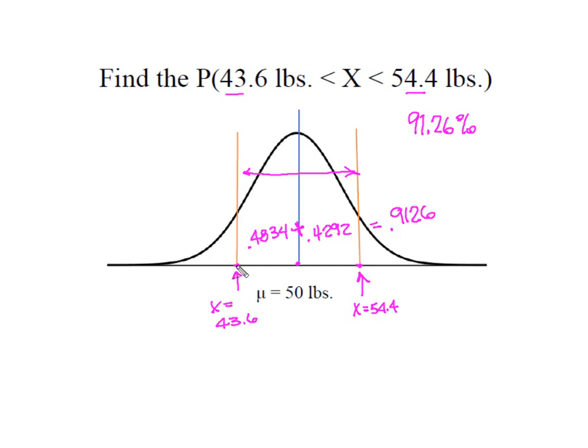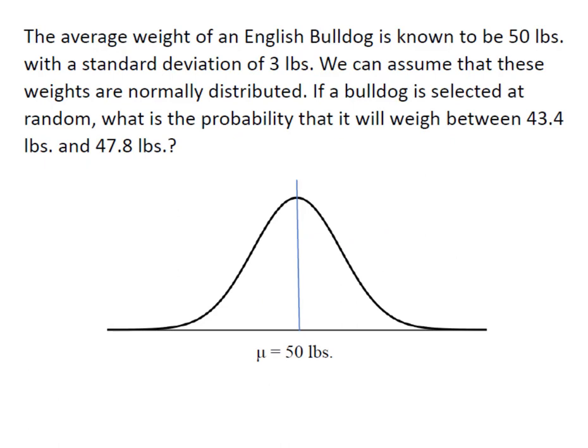What happens though when we have both values of X on one side of the mean, rather it's both below or both above? Same bulldogs, except now I want to know the probability that this randomly selected dog is going to weigh between 43.4 and 47.8. So now I'm going to locate both of my X's on the same side of the mean, and this X will become the 47.8. This X here will become the 43.4 and the area that I'm interested in is this area right here.